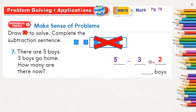The answer of the subtraction sentence is called the difference — two is the difference. Can you recall what the answer of an addition sentence is called? It's called the sum. The answer of a subtraction sentence is called the difference. This symbol is called minus. The answer is two boys remaining.